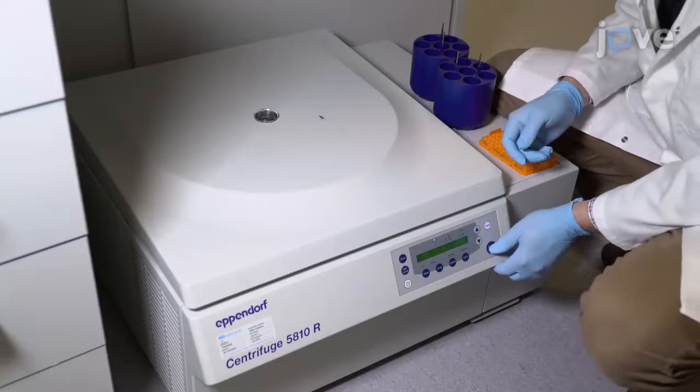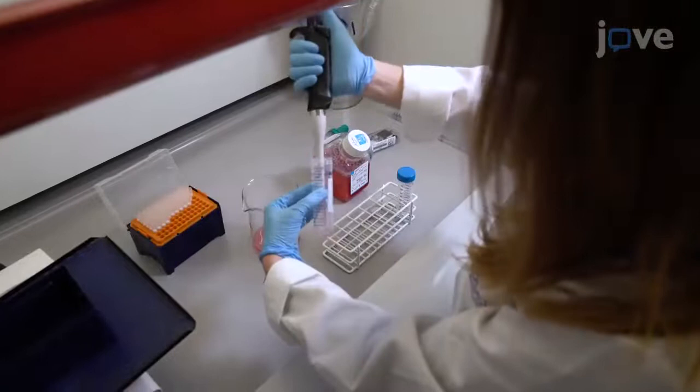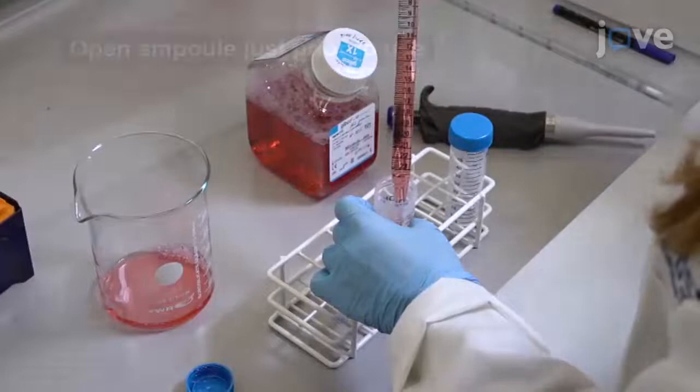Start with a minimum of 20 million cells per experiment. For suspension cells, collect and centrifuge cells at 400 times G and 20 degrees Celsius for 3 minutes. Remove the supernatant and resuspend the cell pellet in 30.625 milliliters of medium with 10% FPS at room temperature.